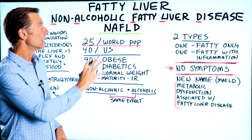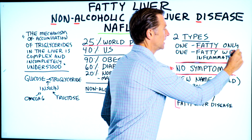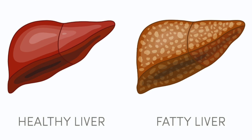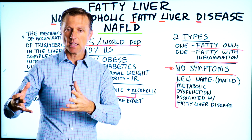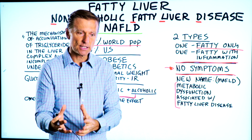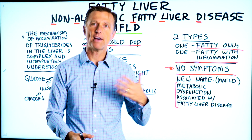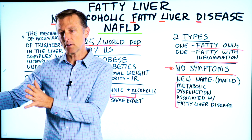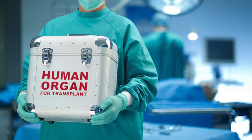There are two types of this disease. One type, you just have the fat only. The other type is fat with inflammation. Here's the problem with having a fatty liver: the symptoms don't occur right away. They take many years because the fat can obstruct certain things in the liver, like the mitochondria, that then lead to inflammation, then insulin resistance, then more insulin, more fat, and then scar tissue. So we go from a fatty liver to a fatty inflamed liver to cirrhosis, and then you need a liver transplant.